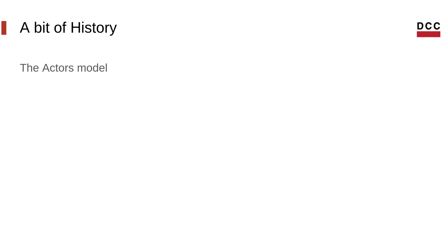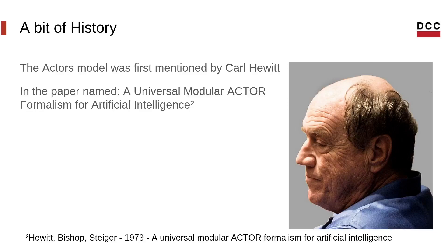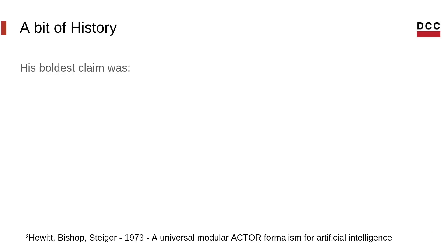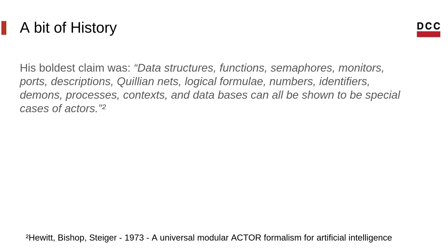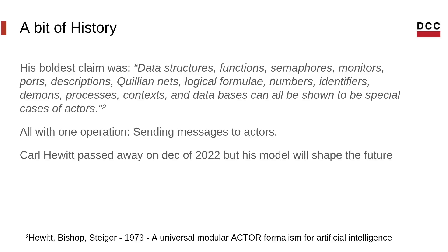Now a little bit of history. The actors model was first mentioned by Carl Hewitt in the paper named 'A Universal Modular Actor Formalism for Artificial Intelligence,' made to be the atom of concurrency of a programming language. His boldest claim was that data structures, functions, semaphores, monitors, ports, descriptions, Quillian nets, logical formulae, numbers, identifiers, daemons, processes, contexts, and databases can all be shown to be special cases of actors — all with one operation: sending messages to actors. Carl Hewitt passed away in December 2022, but his model will shape the future of concurrent programs for years to come.